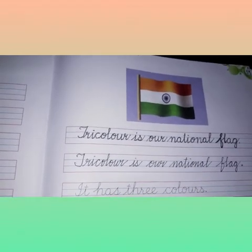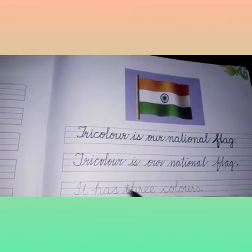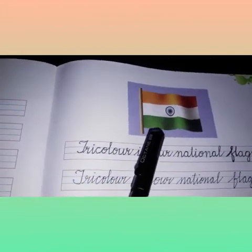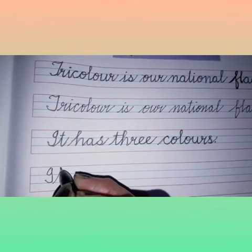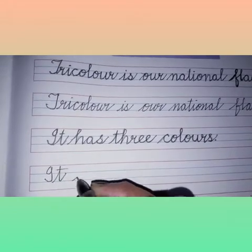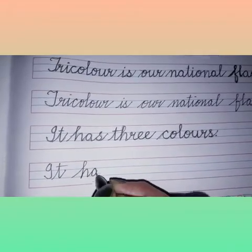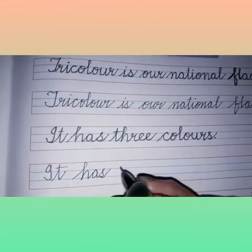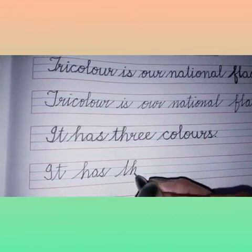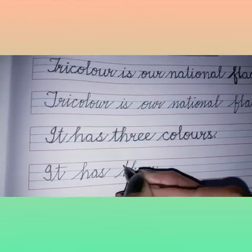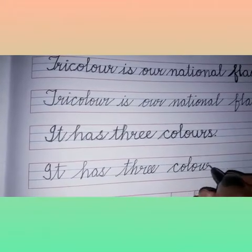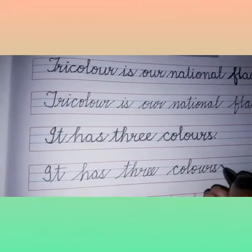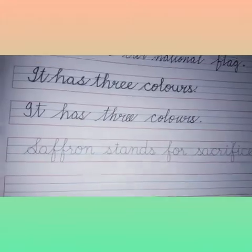Come to the next sentence. It has three colors, as I told you, and you can see here also. I-T, It, H-A-S, Has, T-H-R-E-E, Three, C-O-L-O-U-R-S, Colors. Come to the next sentence.